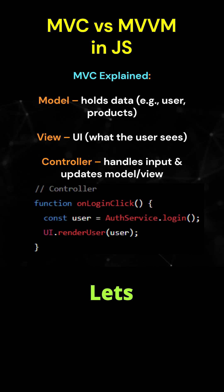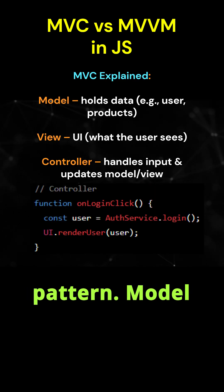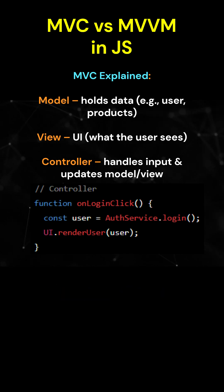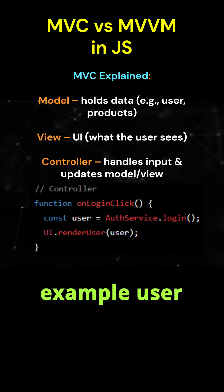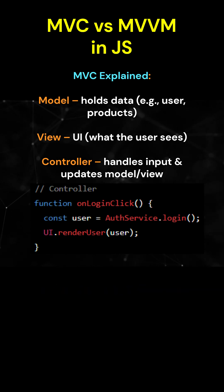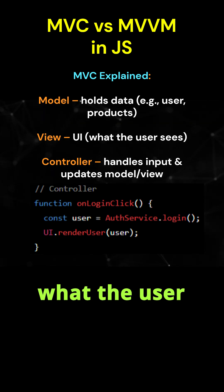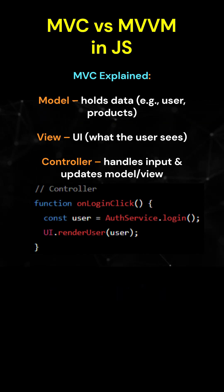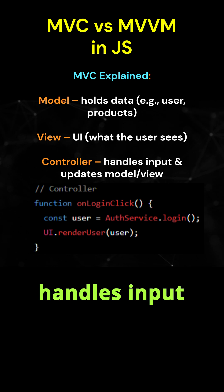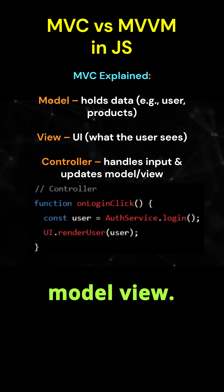Let's understand the MVC pattern. Model holds data — for example, user or product data. View is the UI, what the user sees. Controller handles input and updates the model and view.